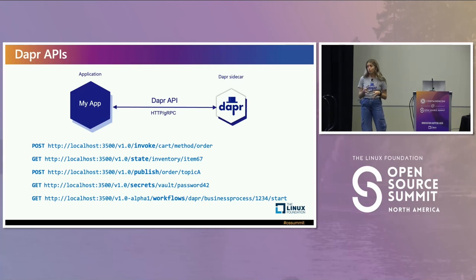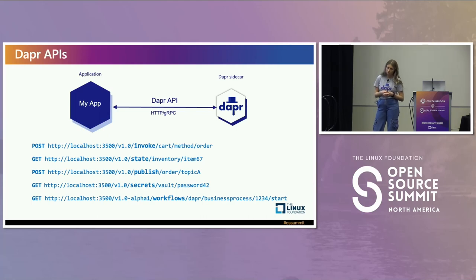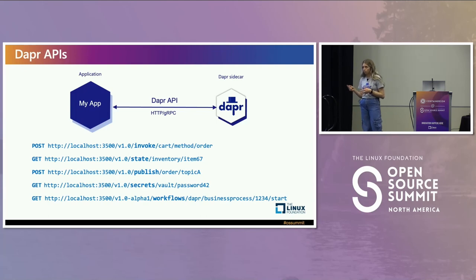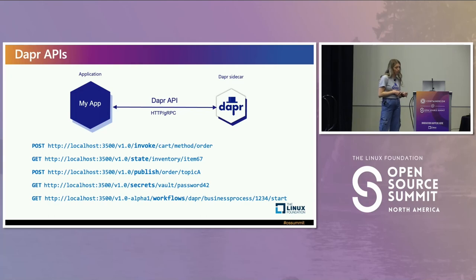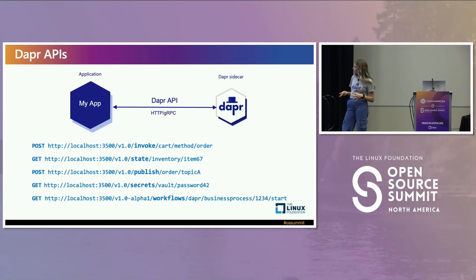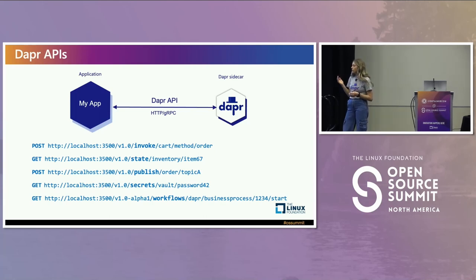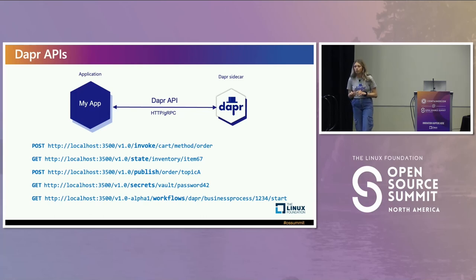This is really great for when moving from development to production and through staging environments, because essentially the URLs you're calling out to don't actually change. So you can promote your app all the way through from dev to prod and call out to the same URL across the board. We have the invocation URL for invoking other services through service discovery, the publish URL for publishing messages to a topic, or even kicking off a long running workflow.